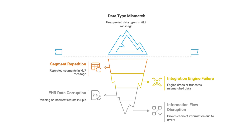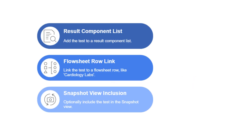Once the data is flowing cleanly through the interface, the application analyst steps in. This is where you configure Epic itself. You'll add the BNP test to a result component list, then link it to a specific flow sheet row — something like 'cardiology labs' — and optionally include it in the snapshot view if it's considered high value for the MDS, the minimum data set. This is where raw data truly gets structured and presented in a way that makes immediate sense to clinicians.